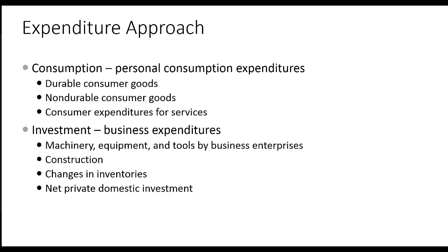Durable goods are things like cars and refrigerators — goods expected to last for at least three years. Non-durable goods are things like groceries and other consumable items, expected to last less than three years. Services include expenditures for doctors, lawyers, mechanics, etc.